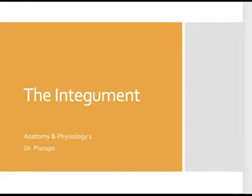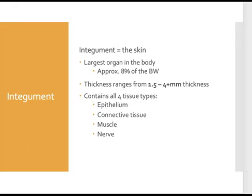That brings us to this week's lecture about the integument, or the skin. Remember, the integument is not a tissue—it is an organ, in fact the largest organ in the human body. Organs are made out of different kinds of tissue that come together to perform a particular function. The integument actually contains all four kinds of tissue. Depending on whether you're looking at the outer layer—the epidermis—or the inner layer—the dermis—you'll find epithelium, connective tissue, muscle tissue, and nervous tissue.